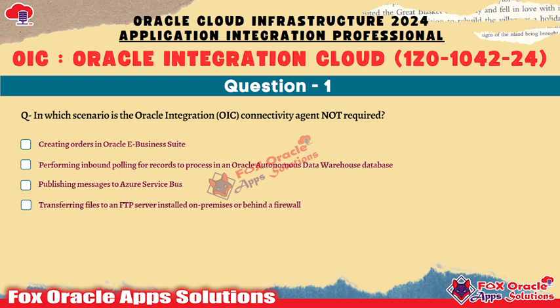You can see these questions are newly introduced in the 2024 certification — they were not previously included. The first sample question is: 'In which scenario is the Oracle Integration connectivity agent not required?' Four options are given and you have to select the correct one. You can pause the screen, take a screenshot, and try to solve it.